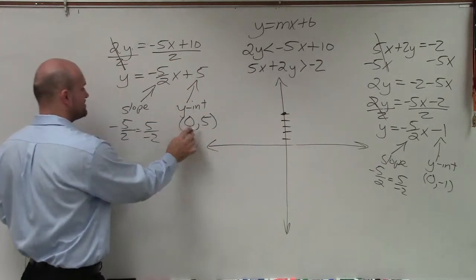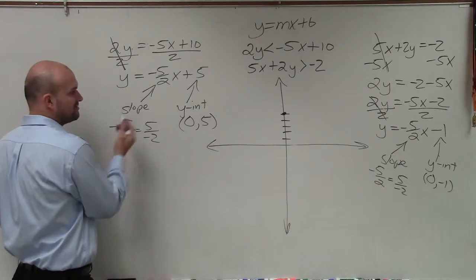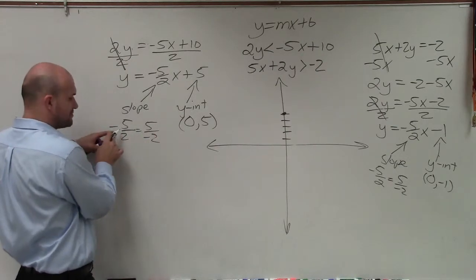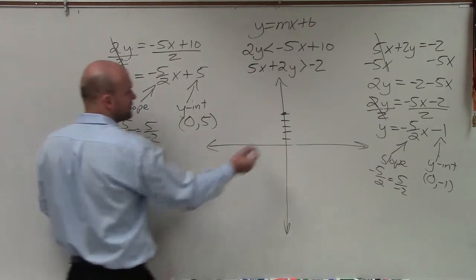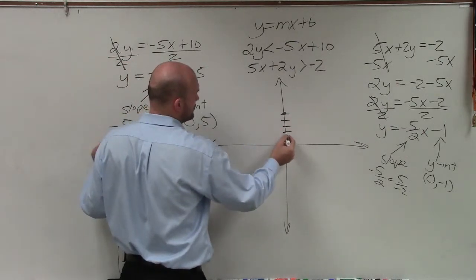That's my y-intercept. Now I'm going to use my slope to find the next point. So I'll use this one, negative 5 over 2. So since the change in the y-coordinates is negative 5, I'm going to go down 5 units, 1, 2, 3, 4, 5.